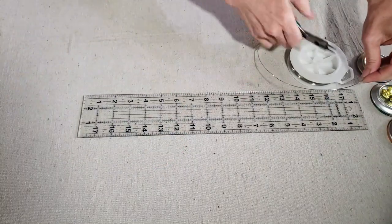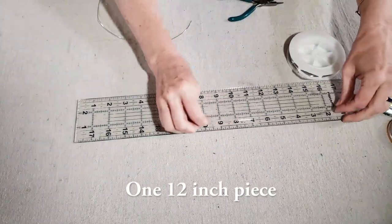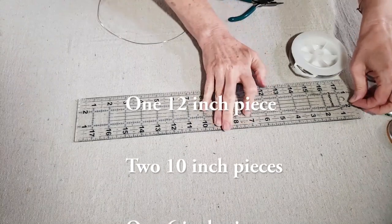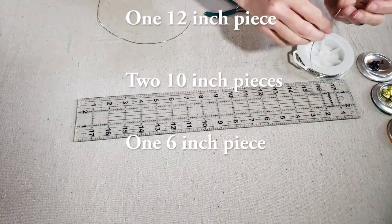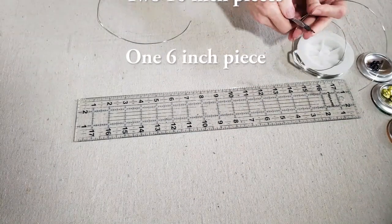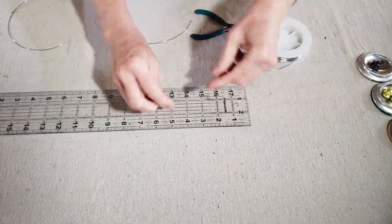To assemble the Bumblebee, the first thing I want to do is cut my wire to length and I need one piece that is 12 inches long, two pieces that are 10 inches long, and another piece at 6 inches long.